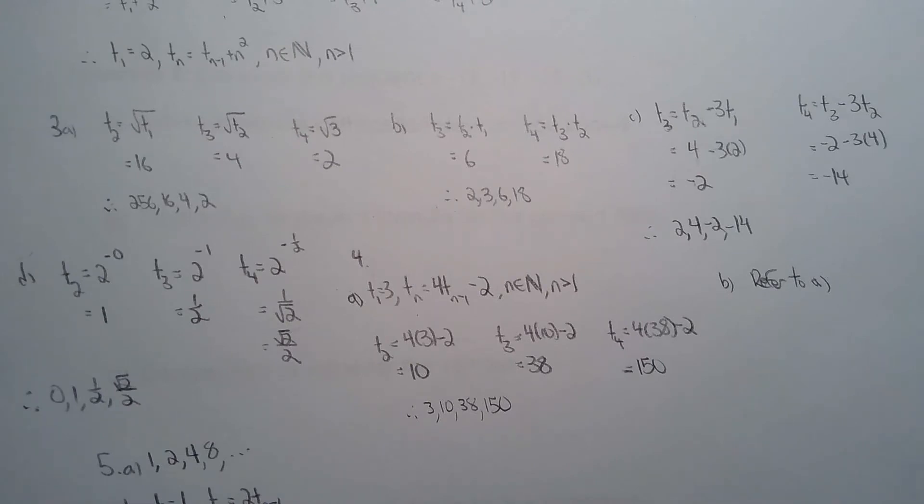So Dana finds out, so she's the first person. And then she tells two people. And those two people tell two more people. So it basically has a doubling effect. So that's how you can find out how many people are told at each step.